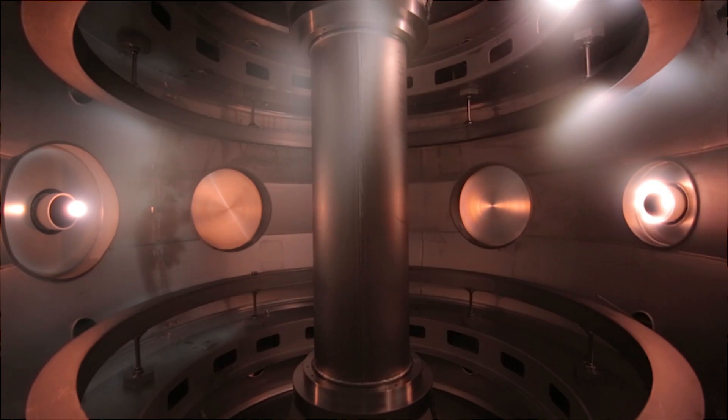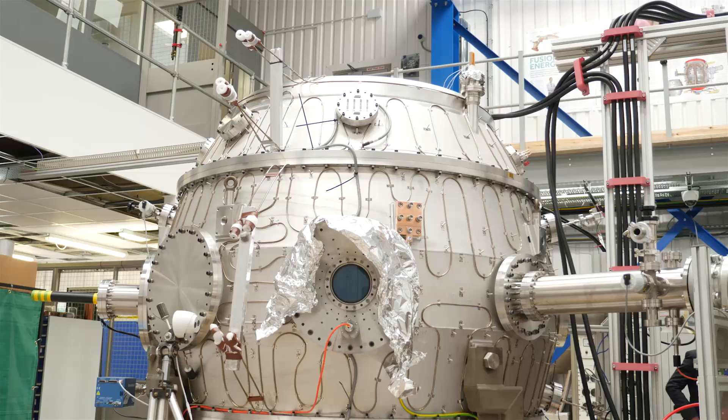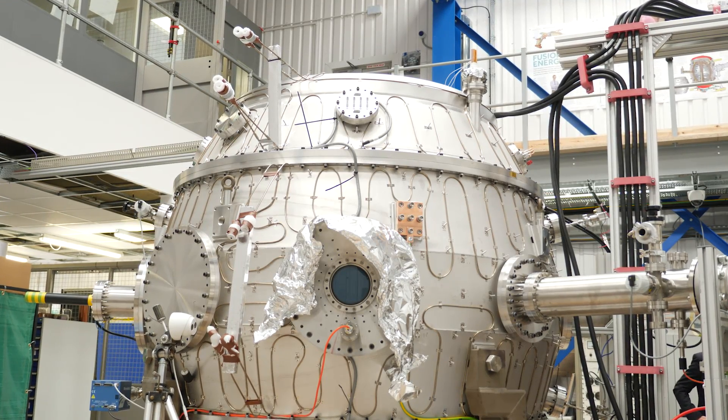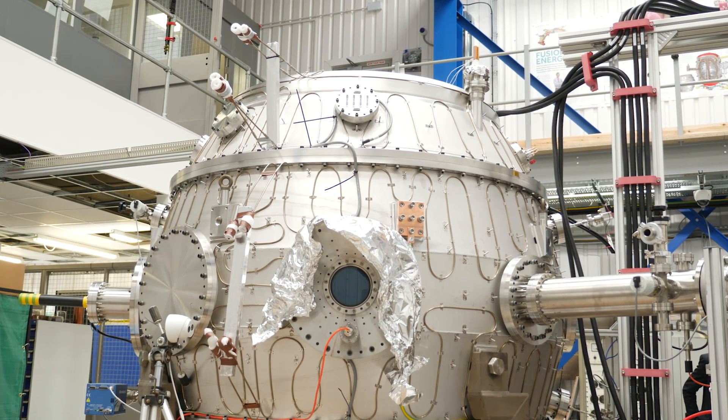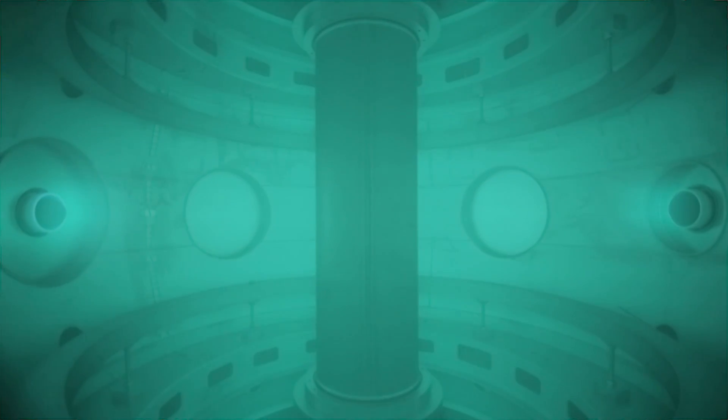They gently knock material that's stuck on the surface of the chamber off and it comes out into the gas which then gets pumped away. It's constantly being flushed through by new helium that's coming in while the old helium carrying the contamination that's come off the walls is pumped away.